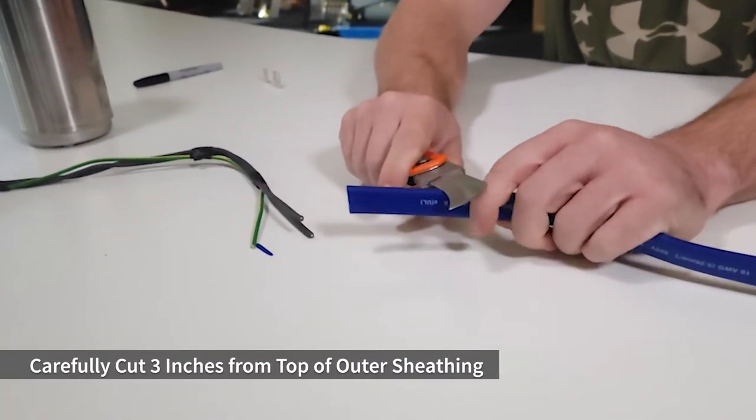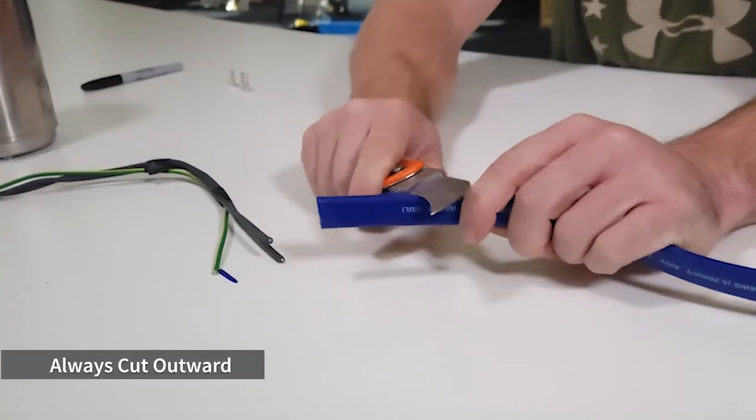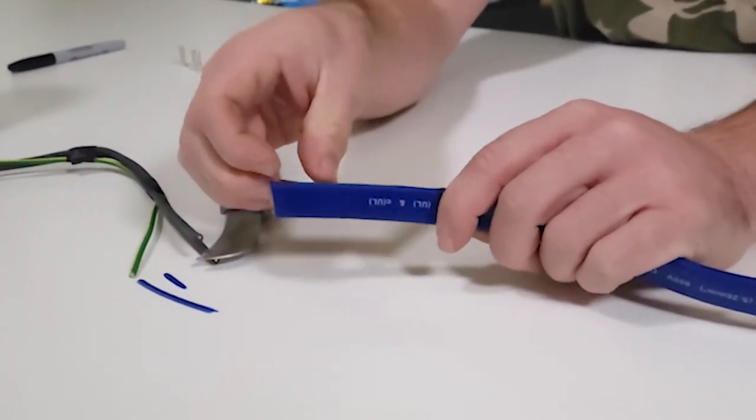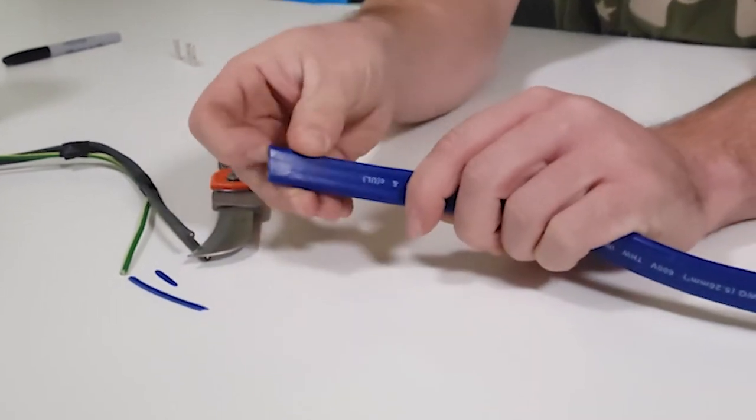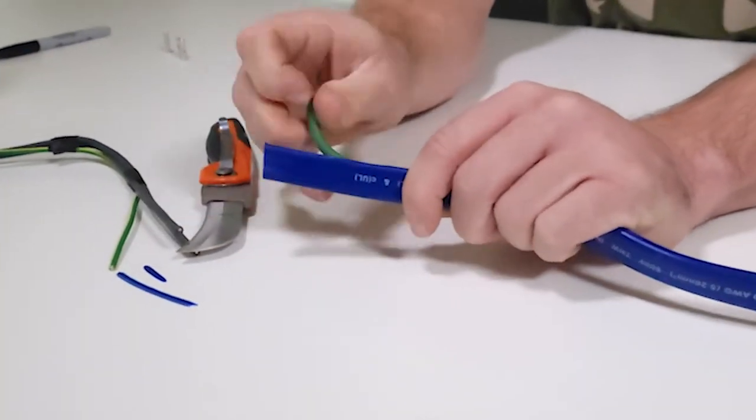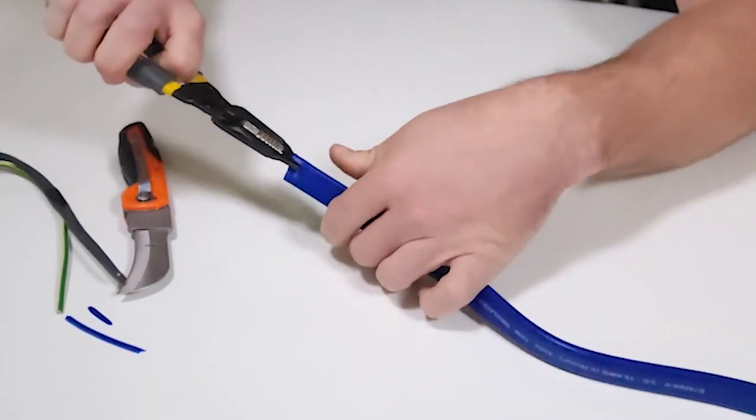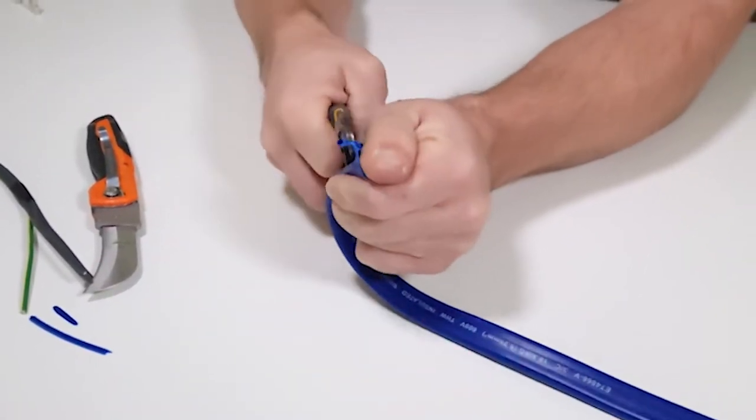Remove 3 inches from the outer blue sheathing on the new cable. Use caution not to cut into the inner wires and always cut out and away from your hand to avoid injury. Peel the first wire away and continue with wire strippers to trim the remaining sheathing.